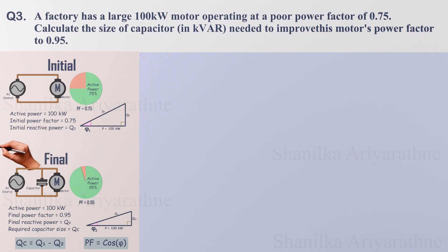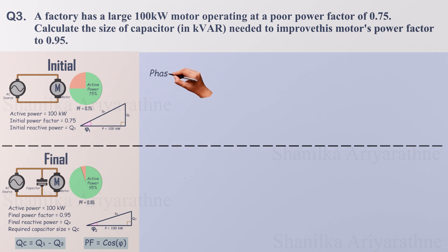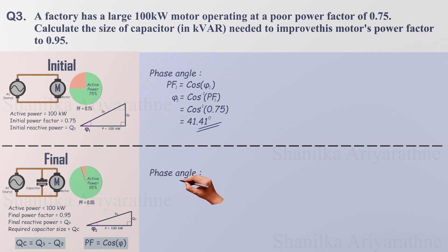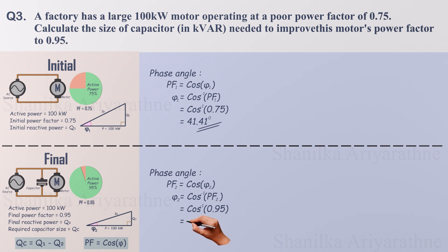Now let's start the calculations. First, let's calculate the phase angle phi1. It is 41.41 degrees. This angle represents the phase difference between voltage and current before correction. Now calculate phi2. It is equal to 18.19 degrees. This is the desired phase angle after correction.